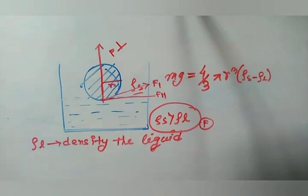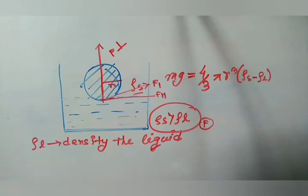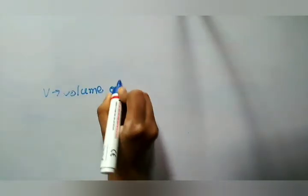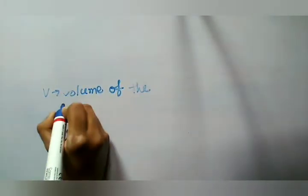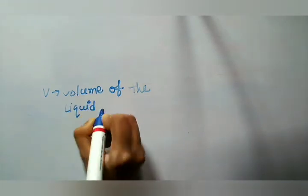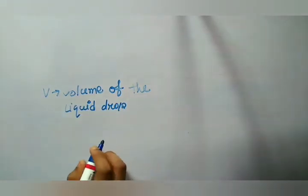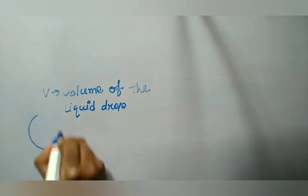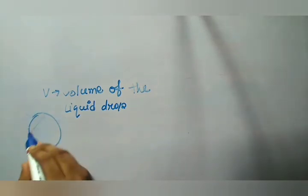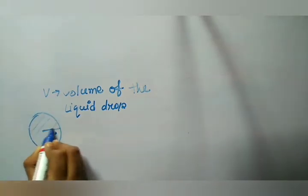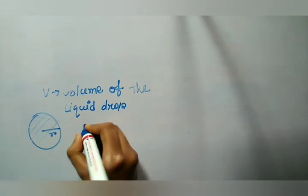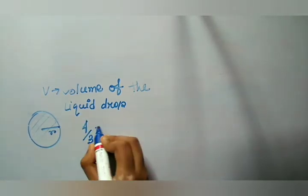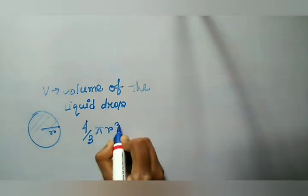We also notice that the liquid drops are spherical. Now, if you consider that V is the volume of a liquid drop which is spherical with radius r, then the volume of the liquid drop is V equals 4/3 π r³.